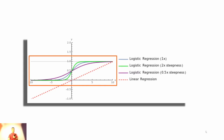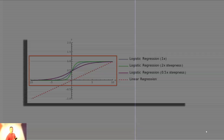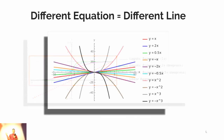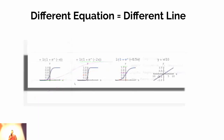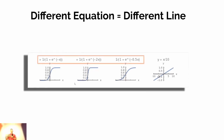Everything is a building block from here, so make sure you understand this before we move on. You won't be tested on memorizing the exact equations, but you will be tested on mathematics at some level. The key idea is: the mathematical equation used for drawing different logistic regression function lines determines the steepness of the curvature — it can be more vertical or more loose depending on the math.